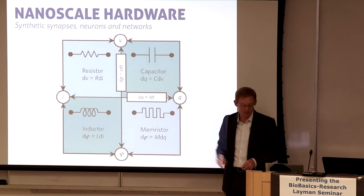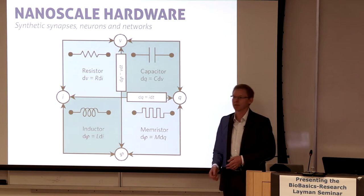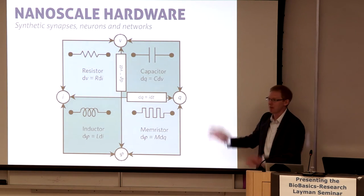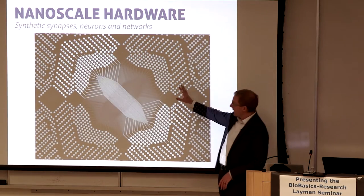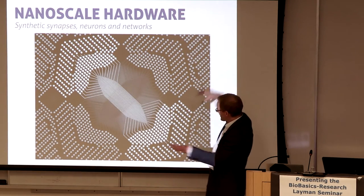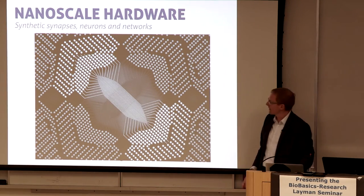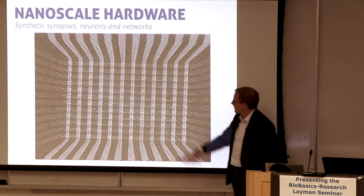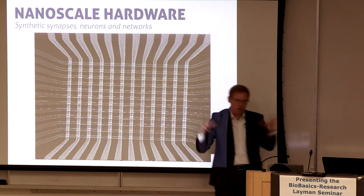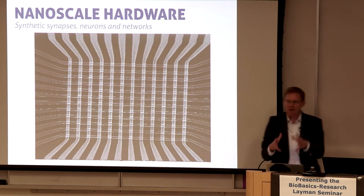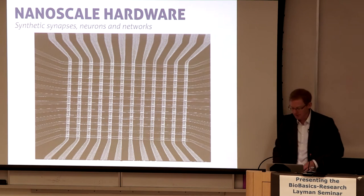These memristor elements can actually do spike timing dependent plasticity, integrate and fire, and all these different neuronal behaviors — by making little materials that don't look like brains at all. These are tiny little wires: high-density arrays where every little junction is one of these little synapses. We can shrink these down and make very high-density, super-efficient types of processors.